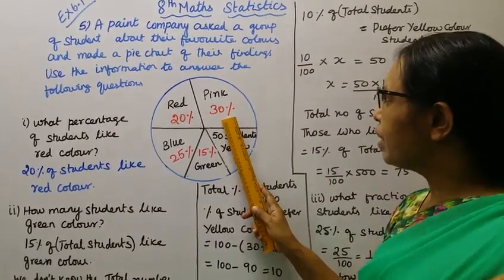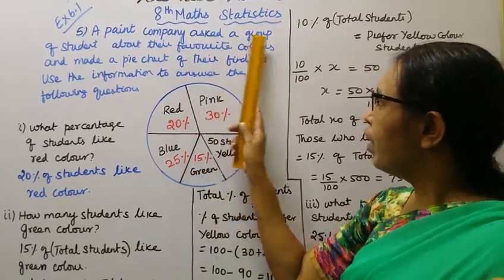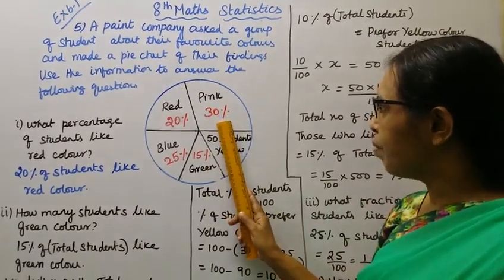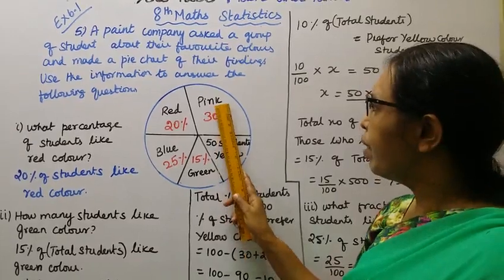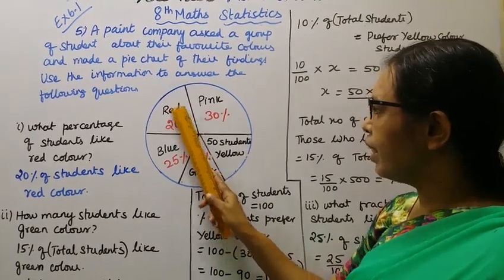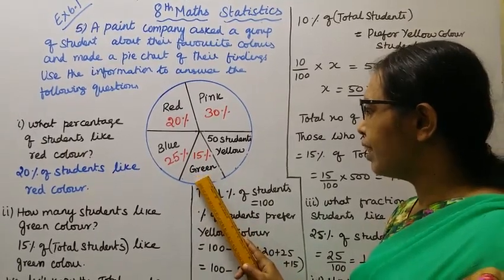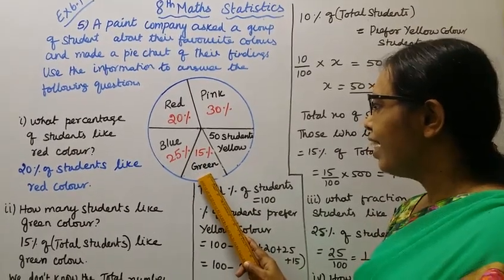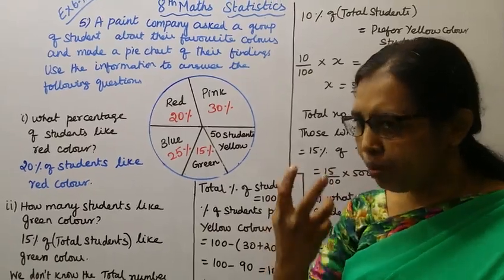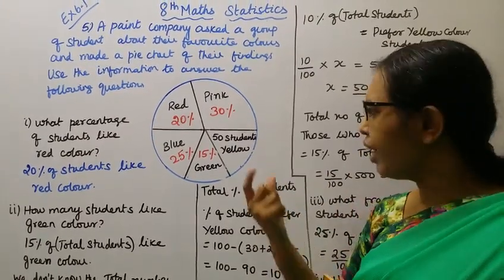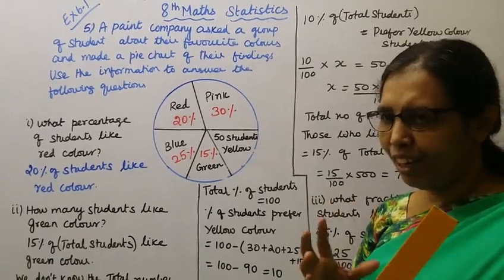The percentages from the pie chart: pink 30%, red 20%, blue 25%, green 15%. The percentage for yellow color is not directly given — we need to find it. These are the colors and their percentages for the group of students.